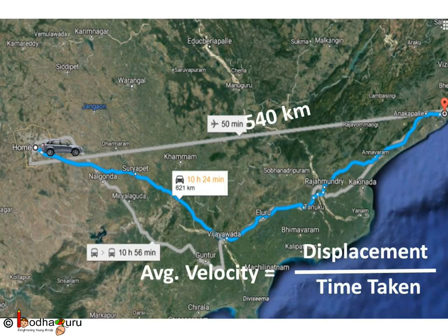While calculating average velocity, I would consider displacement by time taken. So say the displacement, that is the shortest path, was 540 kilometers. So velocity will be 540 divided by 11, which is equal to 49.1 kilometer per hour. And the direction was east.